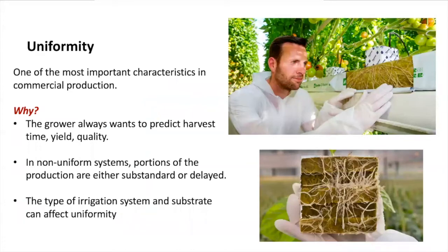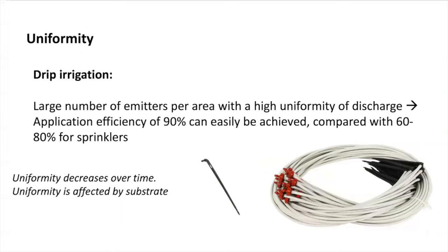Uniformity is one of the most important characteristics about irrigation for commercial production. Uniformity allows you to have more control on different variables that can affect production. Non-uniform systems can cause a delay in days to harvest or even affect quality. Uniformity can be affected by the type and design of our irrigation system, and of course we also need to consider substrates. How can we improve uniformity when using a drip irrigation system? A high number of emitters with a uniform discharge can help you to keep a more uniform root zone environment.